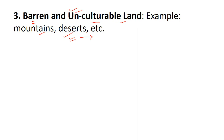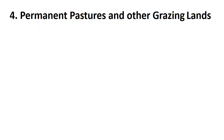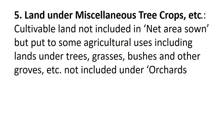The fourth category is permanent pastures and grazing lands. This includes all grazing lands, whether permanent pastures and meadows. Village common grazing land is also included under this head.